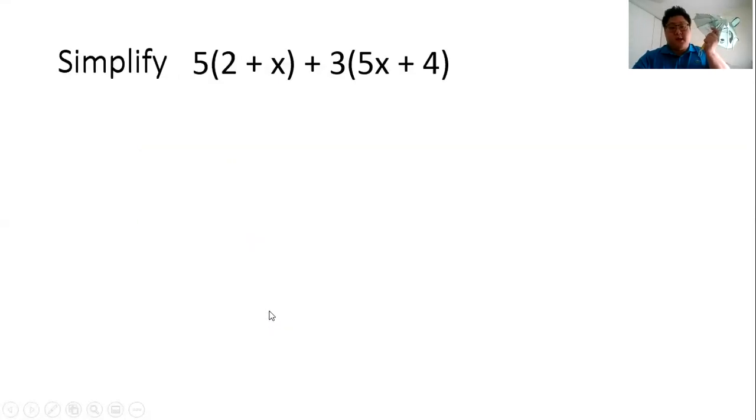Our very last one for today: 5(2 + x) plus 3(5x + 4). We're going to go five times two plus five times x plus three times five x plus three times four. We're going to evaluate that: five times two is 10, that becomes 5x, three times five is 15, we leave the x there as well, and then three times four, which gives you 12.